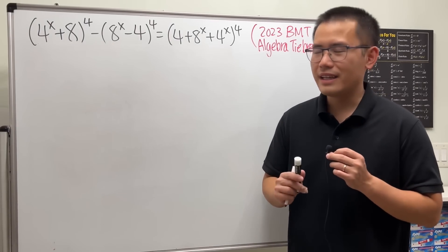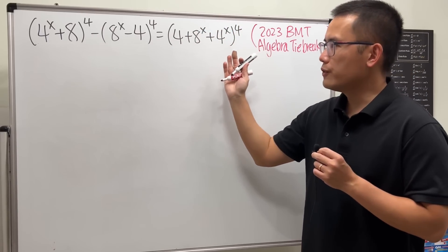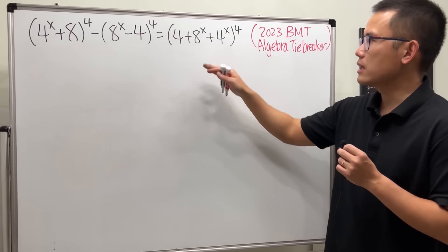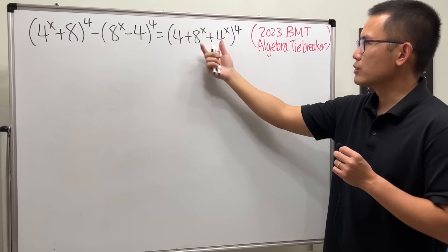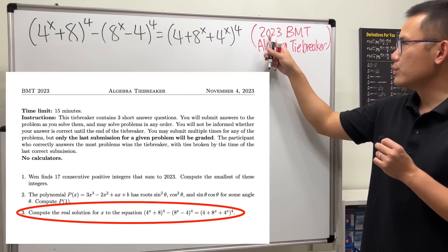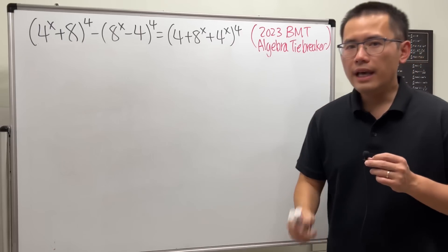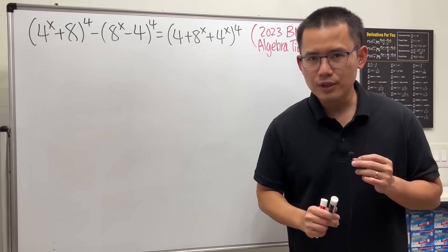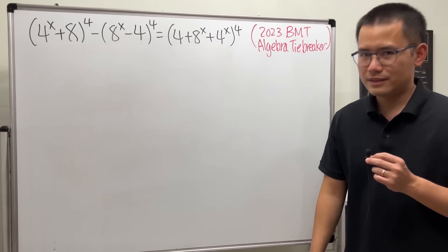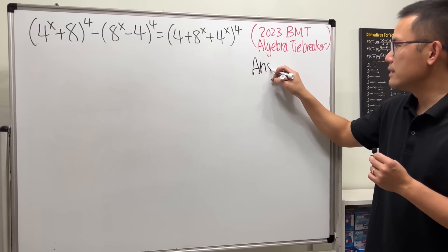Let's do some math for fun. Today I have this equation for you, and we are going to find the real solutions. Notice this is kind of like exponential and also like quartic. This equation is from the 2023 Berkeley MAP Tournament, the algebra tiebreaker. Please pause the video and try this first.